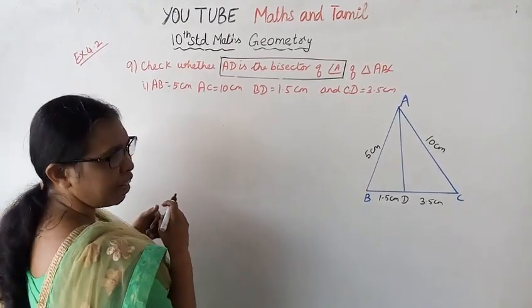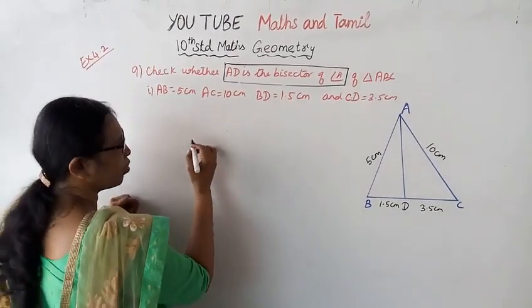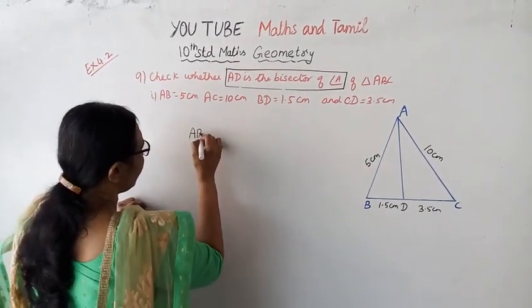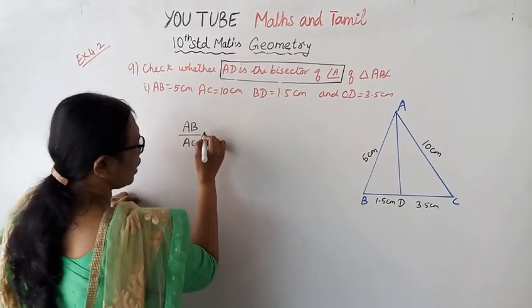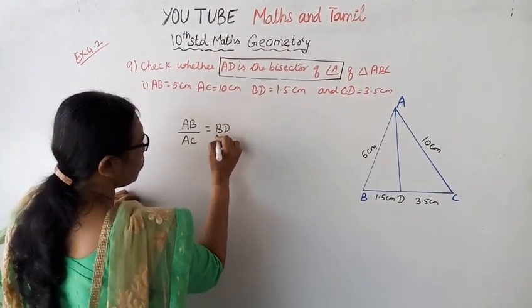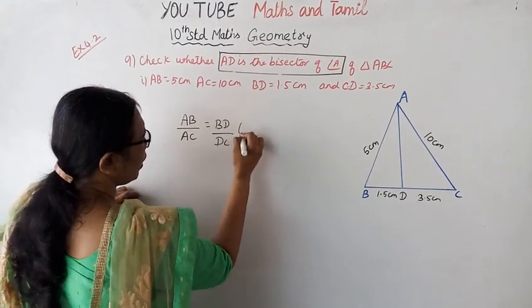To check if AD is the bisector of angle A, we use the angle bisector theorem: AB by AC equals BD by DC.